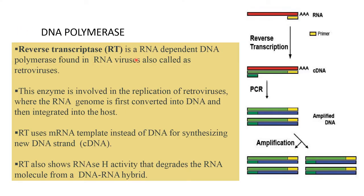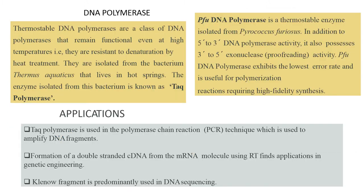Reverse transcriptase (RT) is an RNA-dependent DNA polymerase found in RNA viruses, also called retroviruses. This enzyme is involved in the replication of retroviruses — the RNA genome is first converted into DNA and integrated into the host. RT uses mRNA as a template instead of DNA for synthesis of new DNA, which is also called cDNA. RT also shows RNase H activity that degrades the RNA-DNA hybrid.